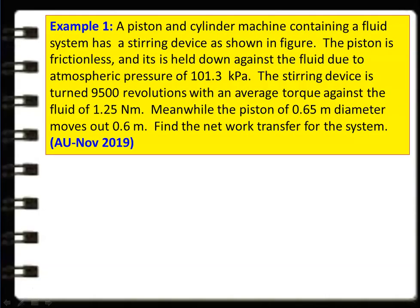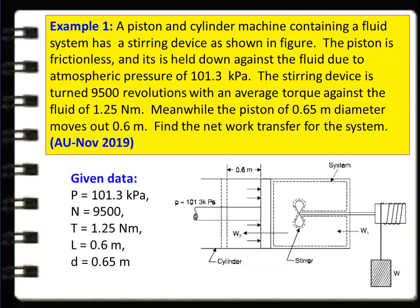The first example is from the Anna University question paper, November 2019. A piston-cylinder machine containing a fluid system has a stirring device. The piston is frictionless and it is held down against the fluid due to the atmosphere pressure of 101.3 kPa. The stirring device is turned 9500 revolutions with an average torque against the fluid of 1.25 Nm. The piston has a diameter of 0.65 meters and moves 0.6 meters. Find the work transfer for the system.